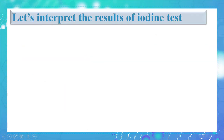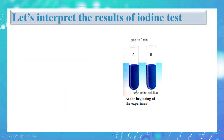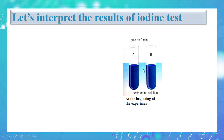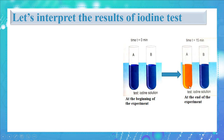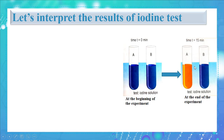Let's interpret the results of the iodine test. At the beginning of the experiment, both tubes show a dark blue color with iodine, indicating the presence of starch. At the end of the experiment, the iodine solution remains brown-orange in tube A, indicating the absence of starch. However, the iodine solution turns dark blue in tube B, indicating that tube B still contains starch.